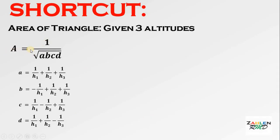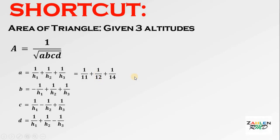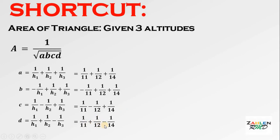The formula is: Area = 1 over the square root of A × B × C × D, where A = 1/H₁ + 1/H₂ + 1/H₃, B = −1/H₁ + 1/H₂ + 1/H₃, C = 1/H₁ − 1/H₂ + 1/H₃, and D = 1/H₁ + 1/H₂ − 1/H₃, with H₁, H₂, H₃ being the altitudes. For our problem, the altitudes are 11, 12, and 14. So: A = 1/11 + 1/12 + 1/14, B = −1/11 + 1/12 + 1/14, C = 1/11 − 1/12 + 1/14, and D = 1/11 + 1/12 − 1/14.